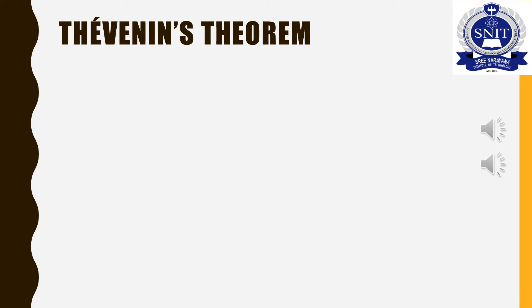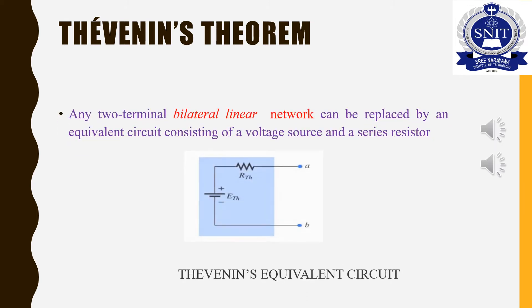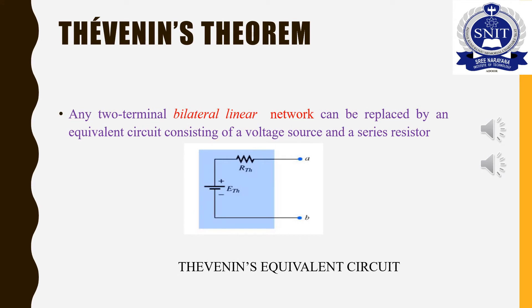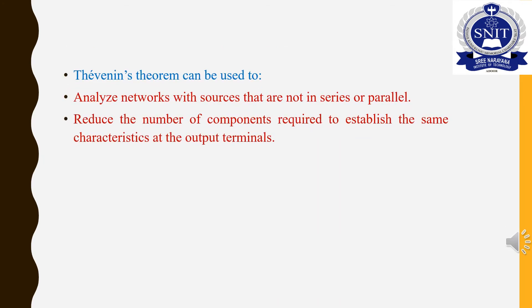Thevenin's theorem states that any two-terminal bilateral linear DC circuit can be replaced by an equivalent circuit consisting of a voltage source and a series resistor. When the circuit has a voltage source with some elements, it will be equal to the equivalent form. The equivalent voltage will be in series with the resistance, so it is applicable to a linear bilateral network.